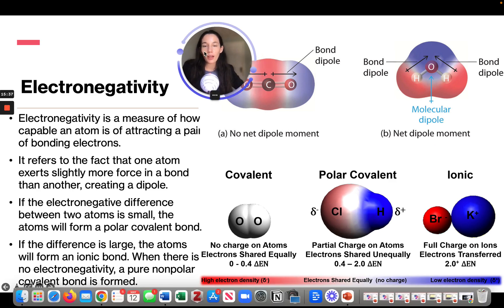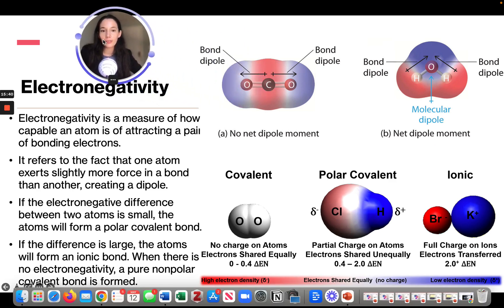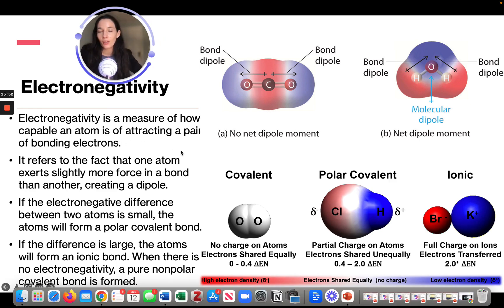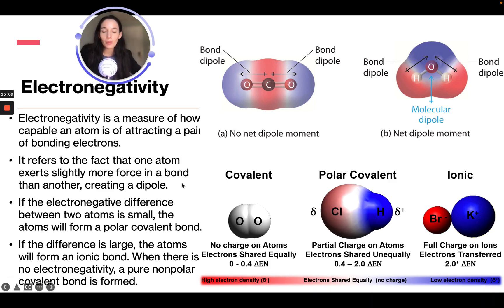Electronegativity is a measure of how capable an atom is of attracting a pair of bonding electrons. It refers to the fact that one atom exerts slightly more force in a bond than another, creating a dipole. If the electronegativity difference between two atoms is small, they will form a polar covalent bond. If the difference is large, the atoms will form an ionic bond. When there is no electronegativity difference, a pure nonpolar covalent bond will form.